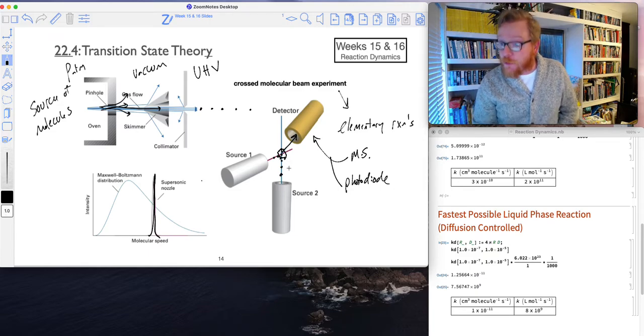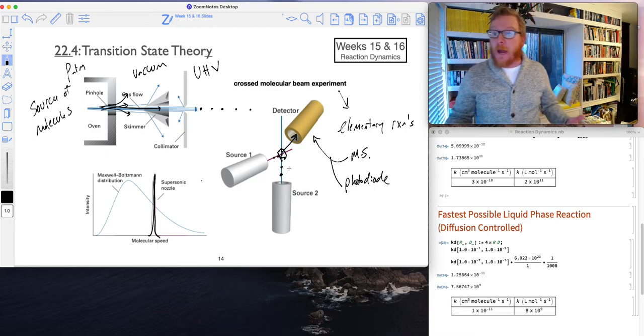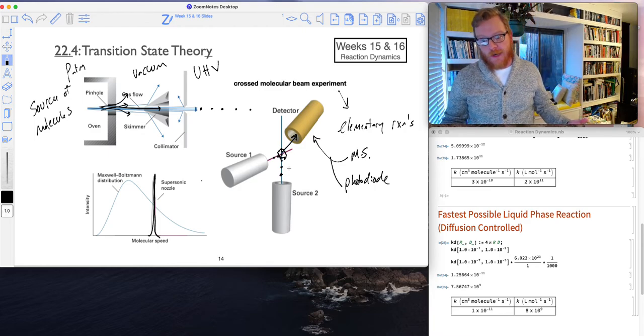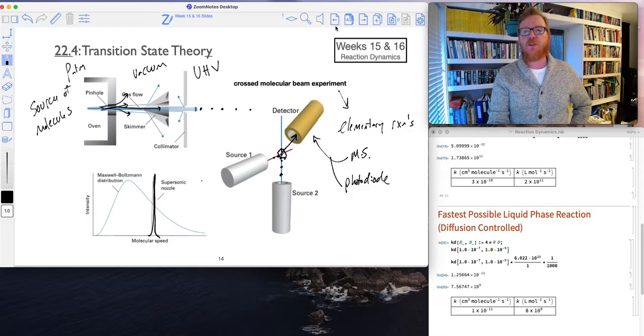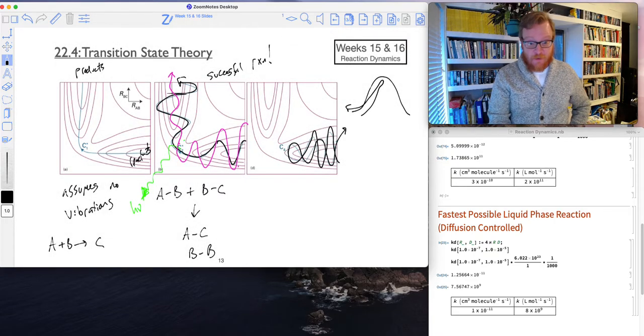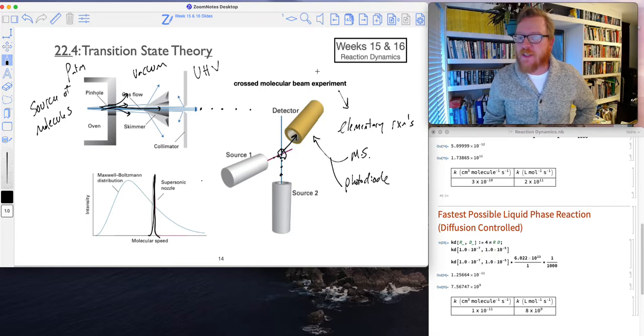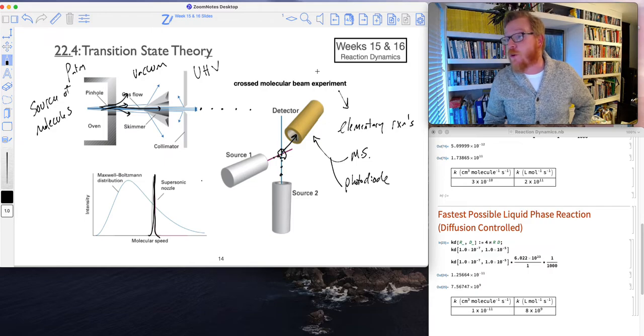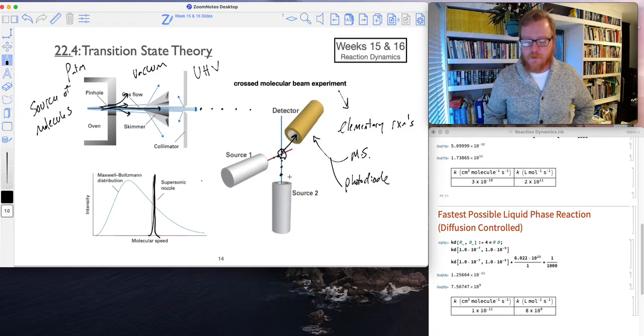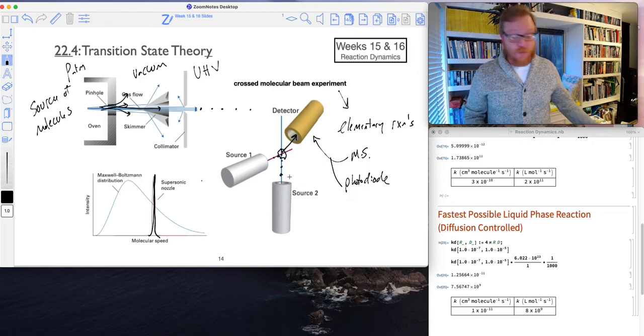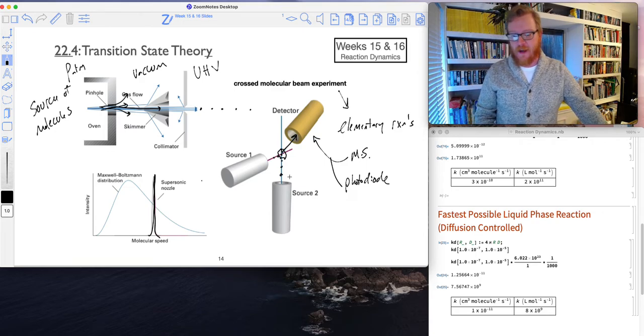But if you put a photo diode in there, you can actually see if there's some type of chemiluminescent reaction going on. Or if you're really interested in all of these vibrational energy levels, like this crazy weird thing I was talking about, you could put an infrared photodiode there and you could actually then measure the vibrational states of the molecule. Or if you put a microwave detector, you could measure the rotational states of the molecule. So this is very, very cool. And it's this type of technology that has allowed us to actually measure and confirm all of these crazy theories that I've been talking about.